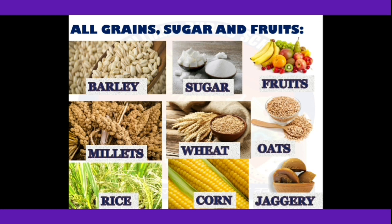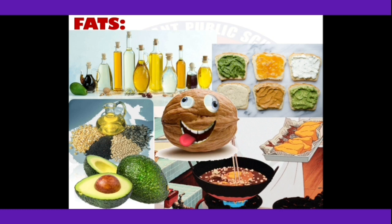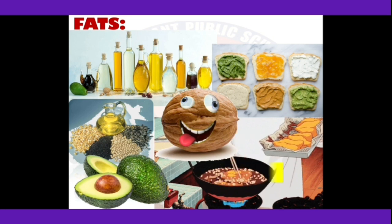Coming to the first member — carbohydrates. Carbohydrates contain glucose and starch. All grains, sugars, and fruits contain carbohydrates. Whatever you feel sweet or starchy in taste contains carbohydrates. For example, fruits, sugar, jaggery, and grains like wheat, barley, rice, corn, millet, and oats all contain carbohydrates.